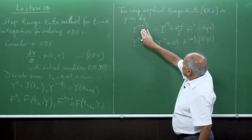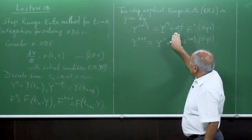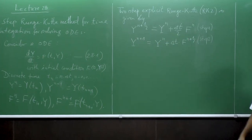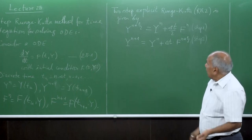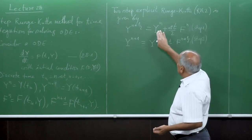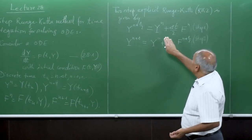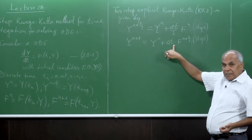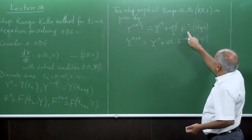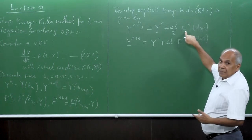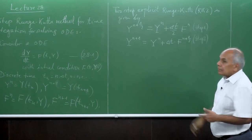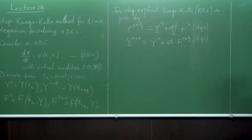Whatever we predict at the half time level — we predict like in the explicit Euler scheme — and then we do the final correction. With the same initial value, instead of having the right-hand-side vector at time level n, we consider time level n+1/2.